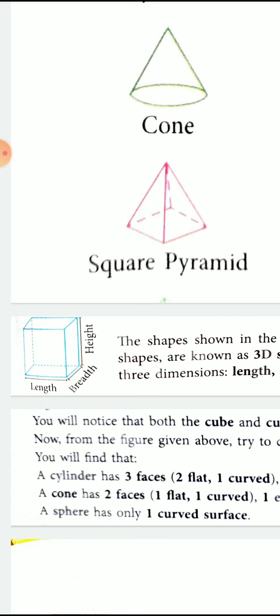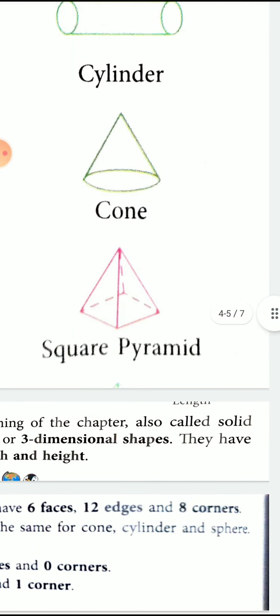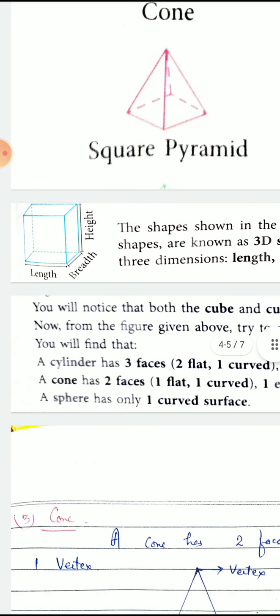8 vertices—vertices means corners—and 12 edges. Same in cuboid.